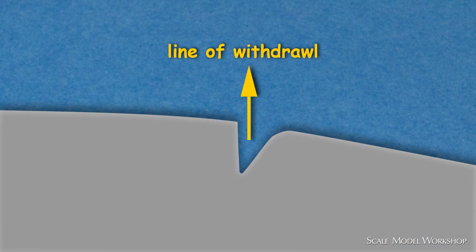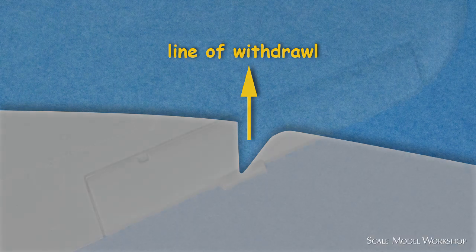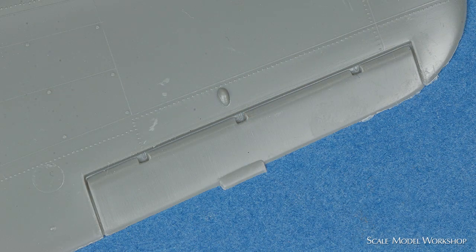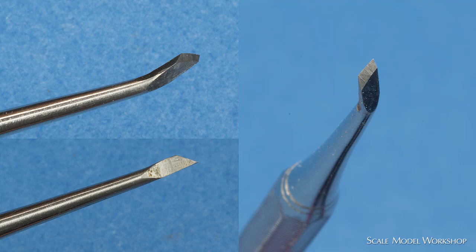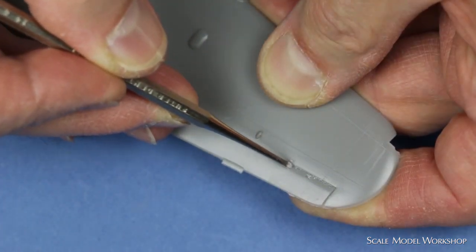Due to the limitations of the molding process, kit detail around control surfaces can look very shallow. Using an instrument like this allows the development of undercut detail that is impossible to mold.